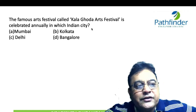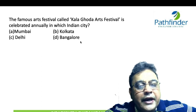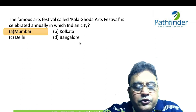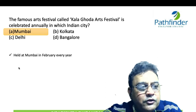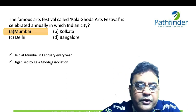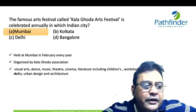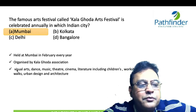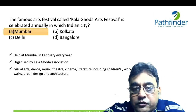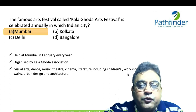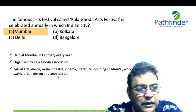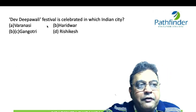Next question: The famous art festival Kala Ghoda Arts Festival is celebrated annually in which Indian city? Options are Mumbai, Kolkata, Delhi, and Bangalore. The correct answer is Mumbai. The Kala Ghoda Festival is organized by the Kala Ghoda Association and is held in Mumbai every year in February. It includes a variety of art forms: visual arts, dance, music, theater, cinema, literature, workshops, heritage walks, and urban design and architecture.